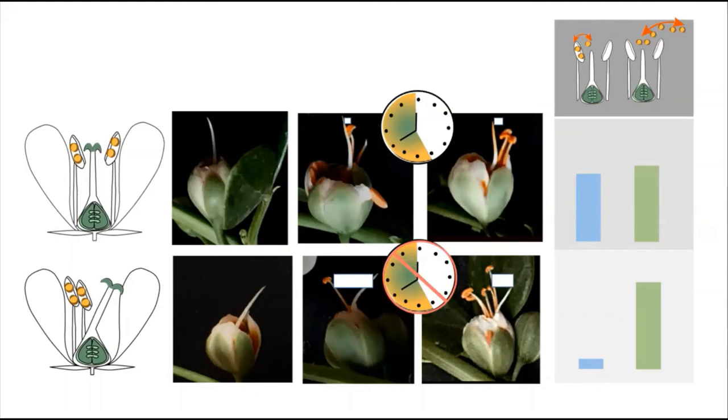Given the potential of herkogamy to evolve rapidly in response to changing environmental conditions and availability of pollinators, we hypothesize that the proportion of L-morph is under natural selection and regulated according to the environmental conditions and outcrossing possibilities.